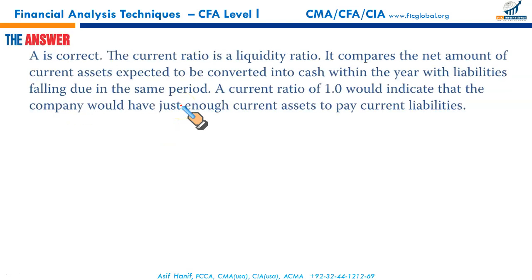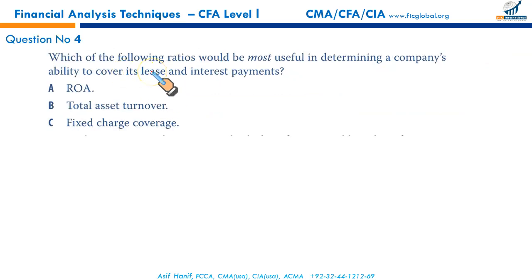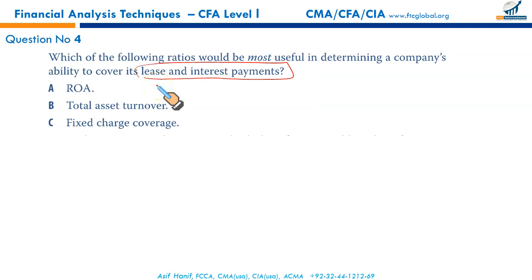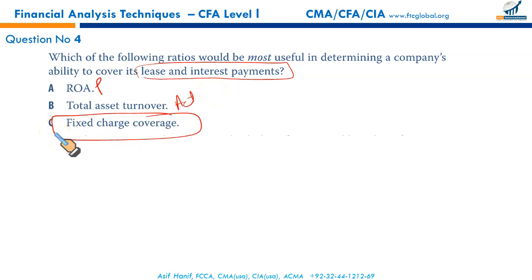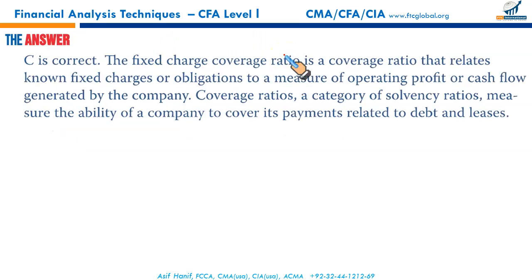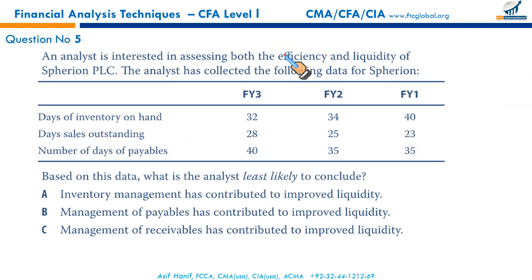Moving on: which of the following ratios would be most useful in determining a company's ability to cover its lease and interest payments? Return on assets is a profitability measure; total assets turnover is an activity measure. Fixed charge coverage determines the company's ability to make payments on lease terms and interest payments. C is the right option.